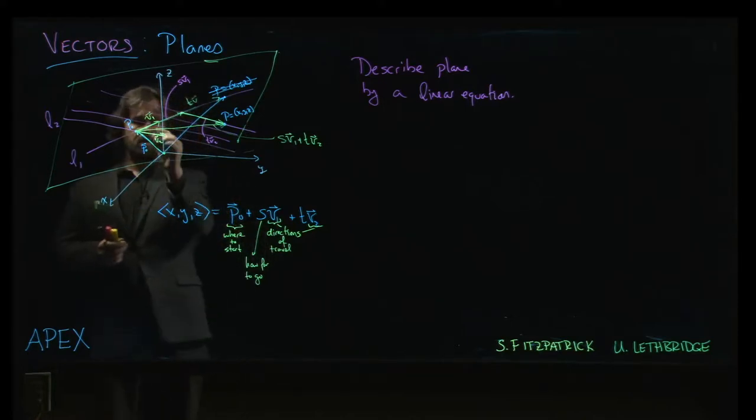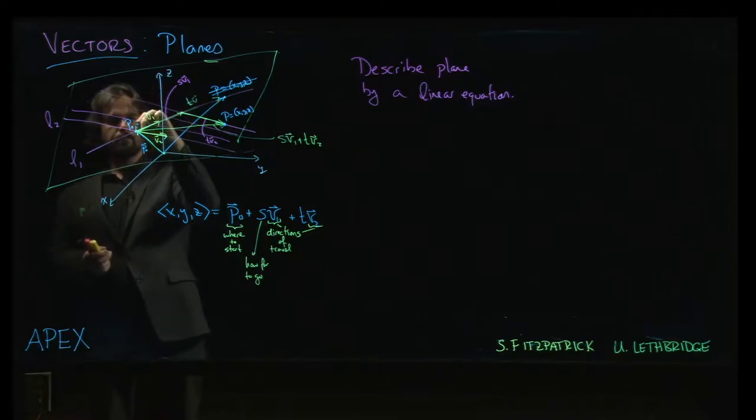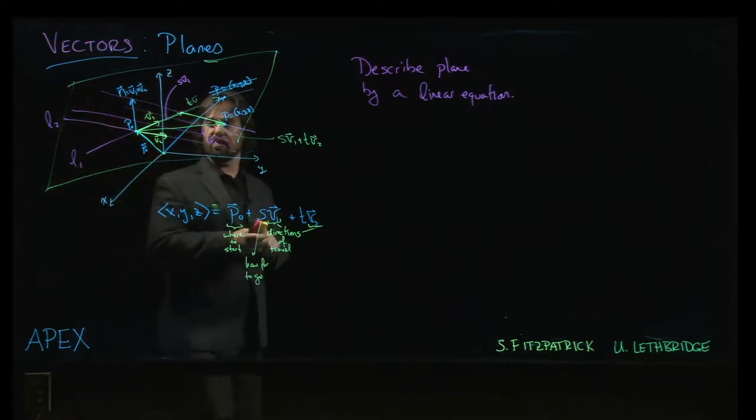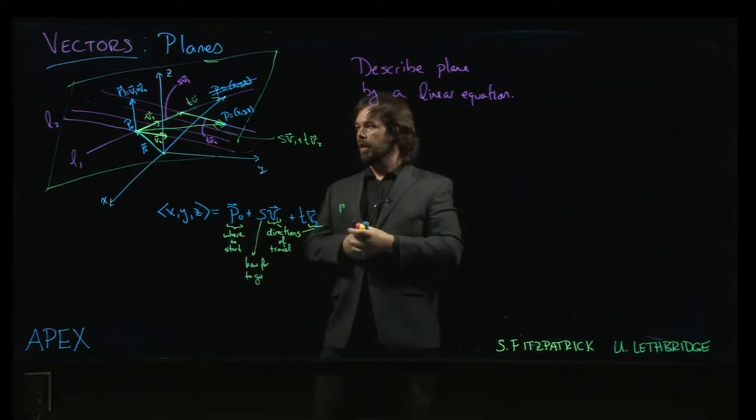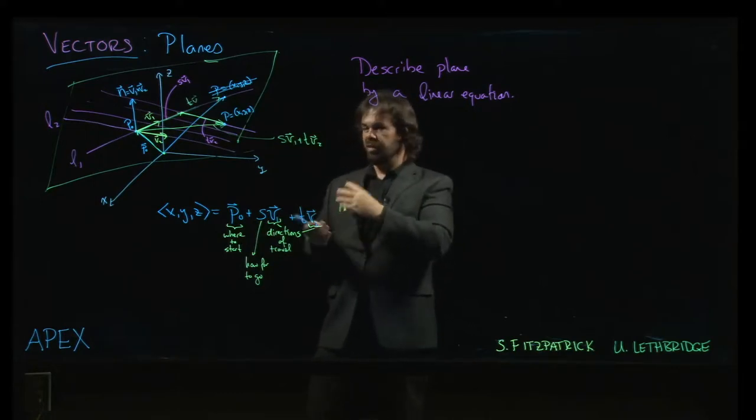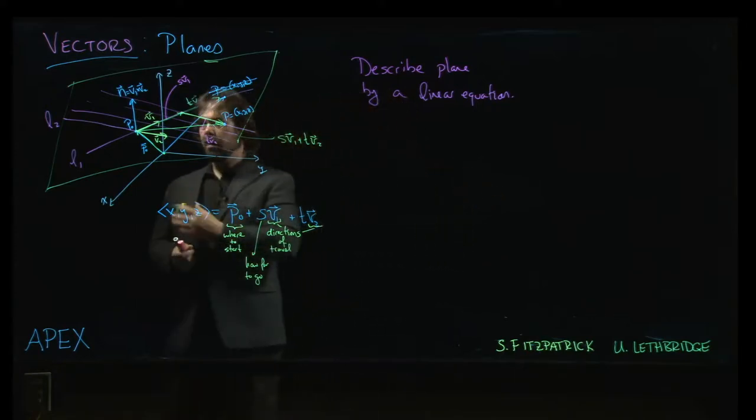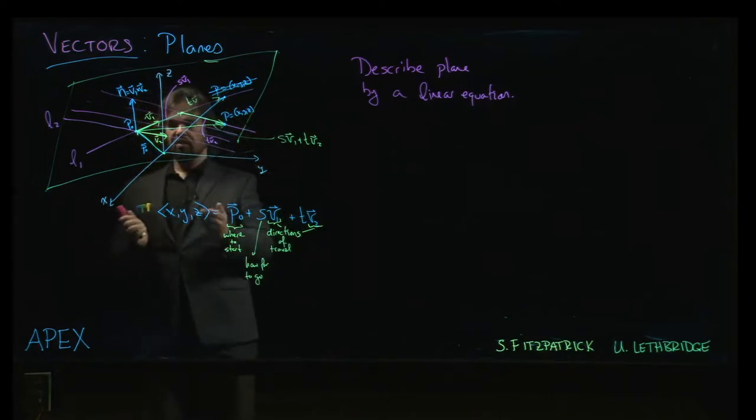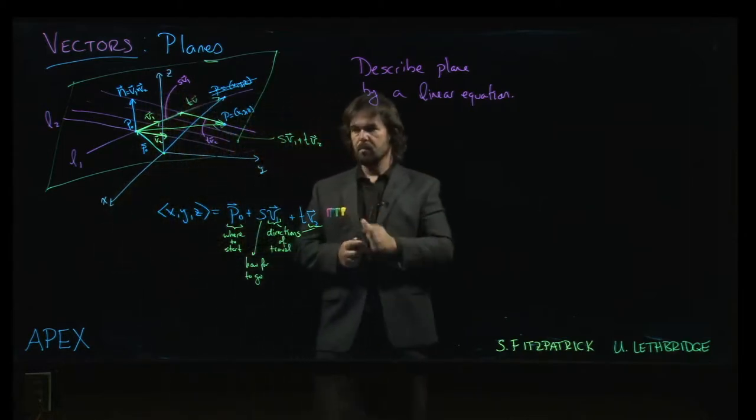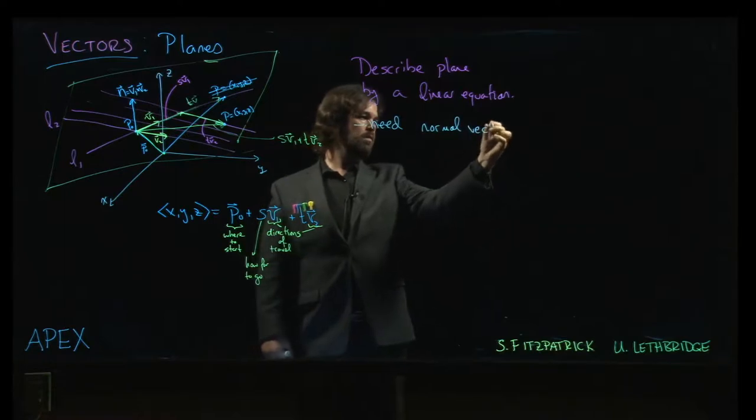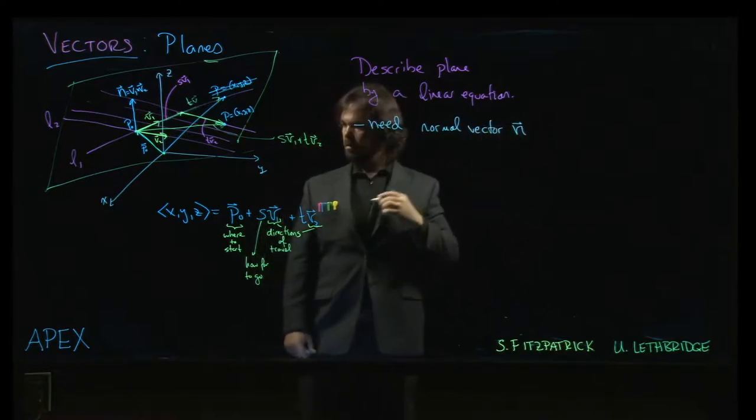So, how are we going to do that? Well, rather than giving the two directions that we can travel, the v1 and the v2, what you can do instead is give the one direction that you can't travel. We can give one vector which is orthogonal to the two that we started with. And, we've been through the section on cross products, so we know how to get that. If we want to get a vector which is orthogonal to both v1 and v2, we'll call that n. How do we get n? It's just going to be the cross product, v1 cross v2.